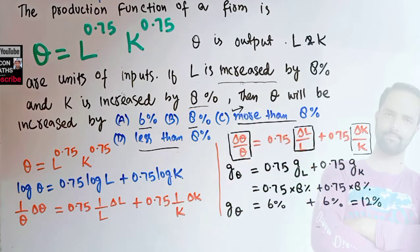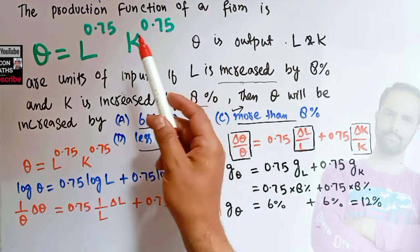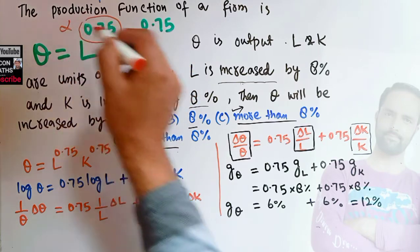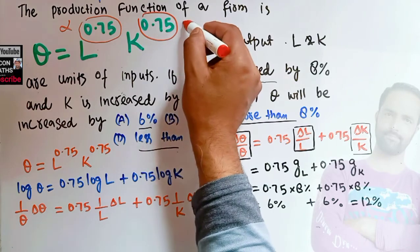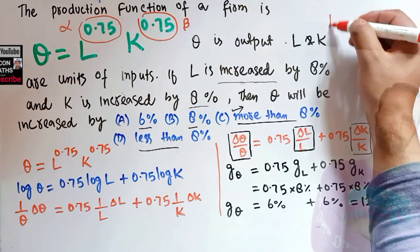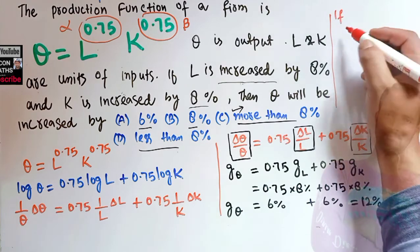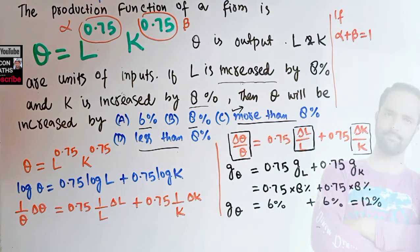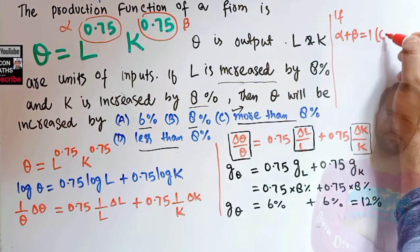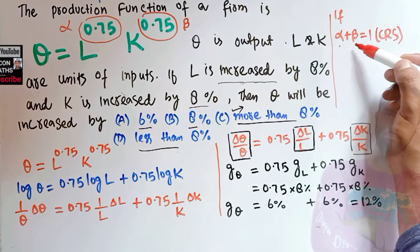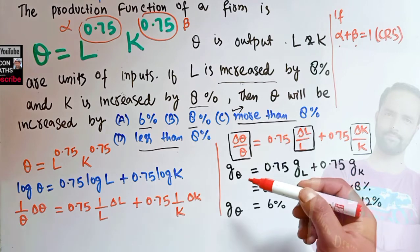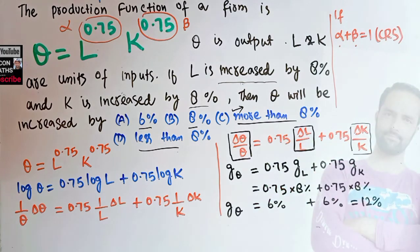The options are 6%, 8%, more than 8%, or less than 8% — so the correct option is C. Now, the shortcut method: you can recognize this as a Cobb-Douglas production function. Call this 0.75 alpha and this 0.75 beta. If alpha + beta = 1, we have constant returns to scale, meaning if inputs increase by the same proportion, output also increases by the same proportion.